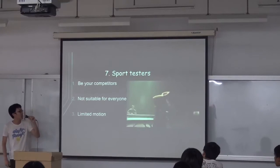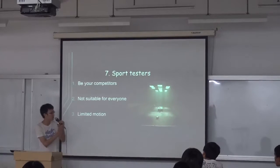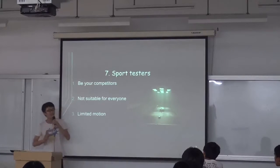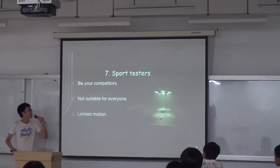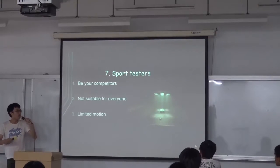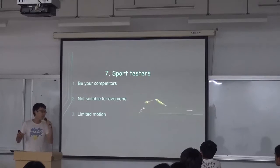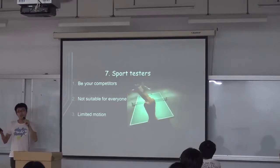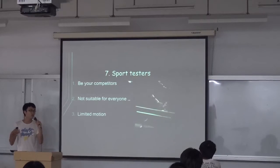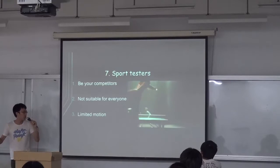Number 7 is the sport test robot. This kind of robot can play against you if you don't have competitors — it can play with you. It also has advanced capabilities. But actually it is not suitable for everyone, because it's very expensive. Not everyone can afford it. If you are not a professional player in a country or sponsored, then you don't have to try to use this machine.